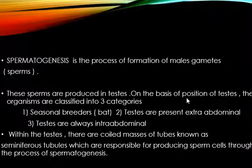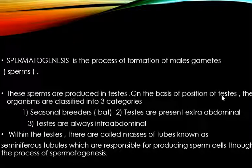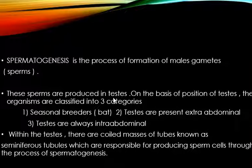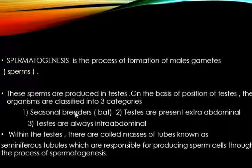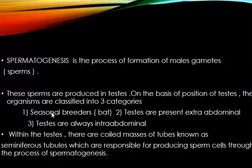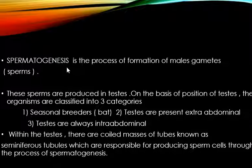On the basis of the position of the testes — yani ki yeh testes kahan present hoti hai — we have divided organisms into three categories. First category mein aate hain seasonal breeders. Jaise ki naam se clear hai, is category mein woh organisms hain jo sirf seasonally hi breed kar paate hain. Unki testes scrotum mein ek particular season mein hi descend karti hain, aur jab woh season khatam ho jaata hai, toh woh phir se vaapis ascend kar jaati hain abdominal area mein.